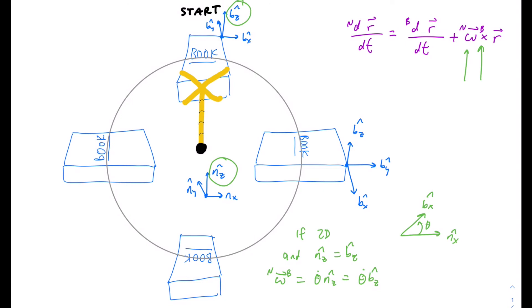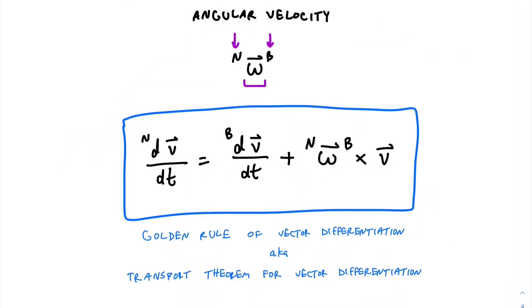This may look familiar — θ̇, the change in theta over time, is what many of us know from high school mechanics classes. This is where it comes from: it's a simplification valid in 2D when there is a fixed shared unit vector between two reference frames. This is handy in many engineering applications such as robotic arms. That concludes this brief introduction to angular velocity and the golden rule of vector differentiation. We've barely scratched the surface of classical mechanics, so if you want to learn more, I recommend reading Paul Mitigie's books, which are linked in the description. I hope this is useful and good luck on your studies.